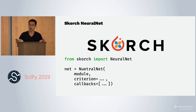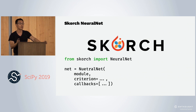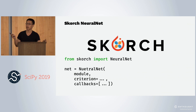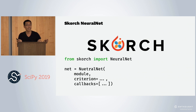At the top level, Scorch defines a neural net object. What the neural net object needs is a module defined in PyTorch, and also something to optimize over, like a criterion. Optionally, you can provide callbacks. We could go through this API without any data, but it would be kind of boring.